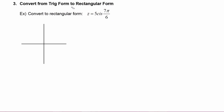First, it's a great idea to draw a picture of z. We know that theta is seven pi over six, which means we're in quadrant three, and we know that r is equal to five.